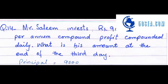This question is a little tricky. Mr. Saleem has invested Rs. 9,000 at 2% per annum rate. That means the rate is 2% annually, but his profit is compounded daily, on a daily basis.